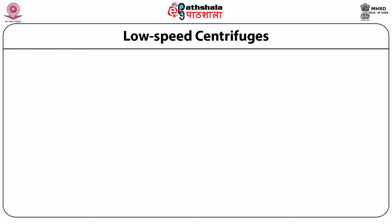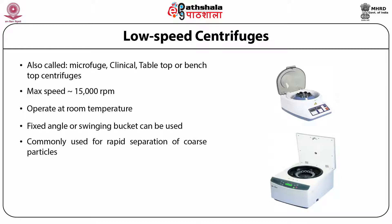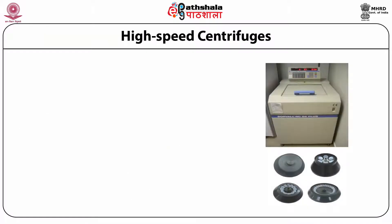The low speed centrifuge is also called a microfuge, clinical, or tabletop bench-top centrifuge. It operates at a maximum speed of 15,000 RPM, is most widely used in the laboratory, and operates at room temperature — this kind usually does not have a temperature control system. Both fixed angle and swinging bucket rotors can be used. It is commonly used for rapid separation of coarse particles like RBC from blood or DNA from protein. The sample is centrifuged until particles are tightly packed into a pellet at the bottom and the supernatant is separated.